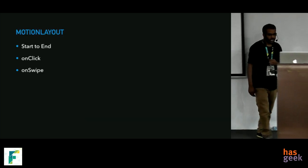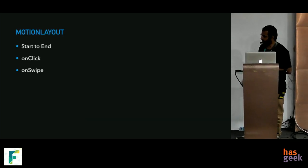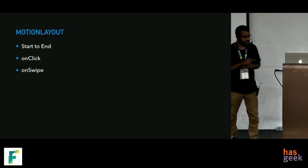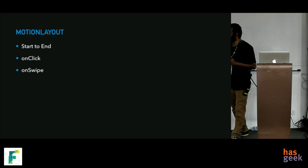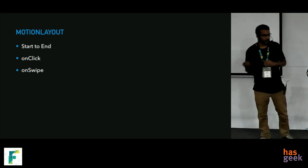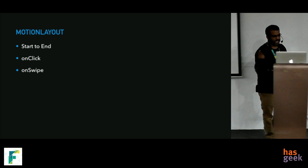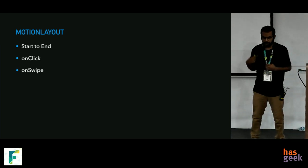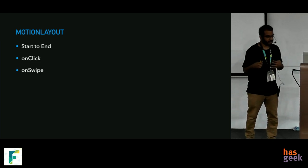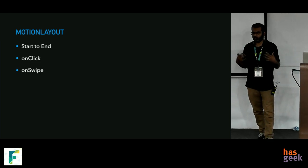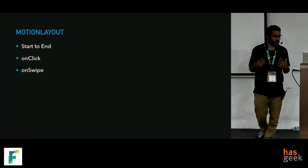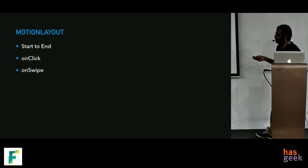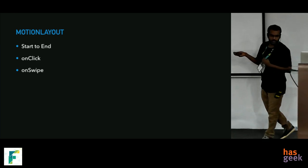Motion layout has a start and an end. During the transition there are keyframe animations. You can initiate the animation by on-click or by swiping — when swiping you can notify the motion layout to start, and you can define that in XML as well.